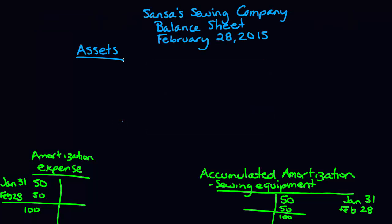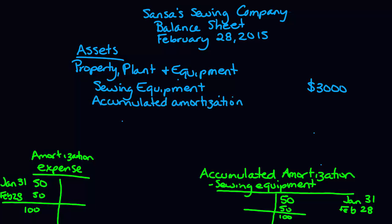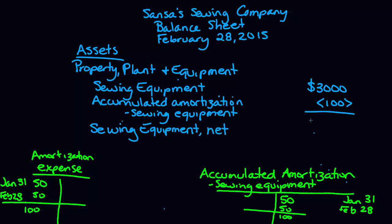The accumulated amortization account shows up on the balance sheet with the sewing equipment account. If we do our balance sheet at February 28th, looking at the asset side under property, plant and equipment, we list out our sewing equipment purchased for $3,000 — it stays at its cost on the balance sheet. The accumulated amortization sewing equipment of $100 is deducted from that $3,000, giving a net balance of $2,900. Every single month, our accumulated amortization account increases and decreases the net sewing equipment amount on the balance sheet.